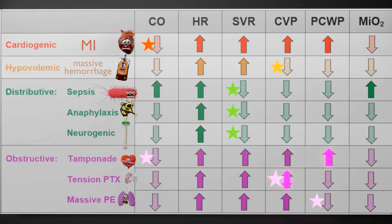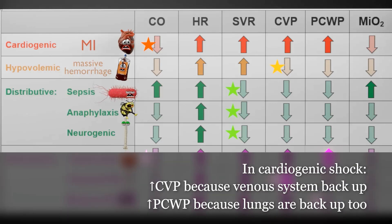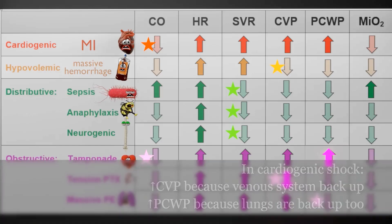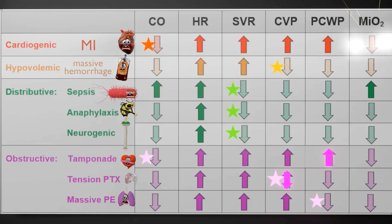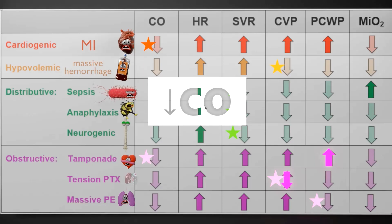Since the heart doesn't work, there's a forward failure of the cardiac pump, resulting in backup of blood within the venous side of the system. PCWP — pulmonary capillary wedge pressure — will also be increased because blood can't get from the lungs into the heart properly. Finally, mixed venous oxygen saturation will be down because cardiac output is not high enough to meet tissue oxygen demands. Just remember, the main parameter is reduced cardiac output, and everything else logically flows.